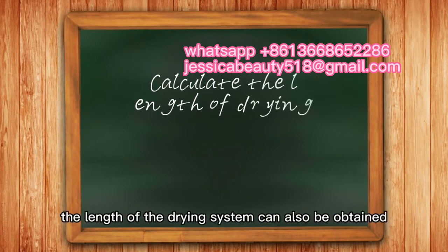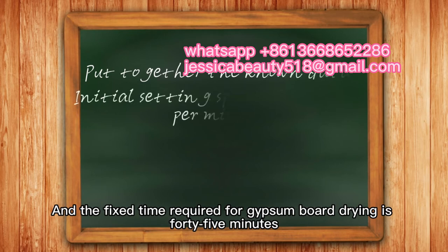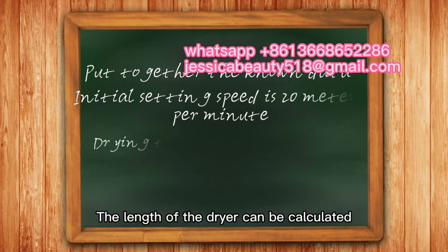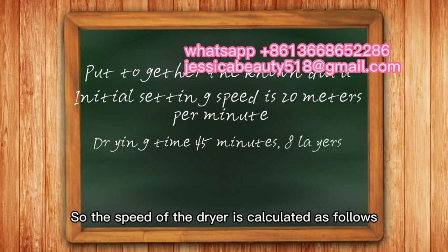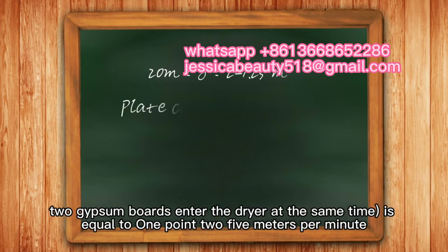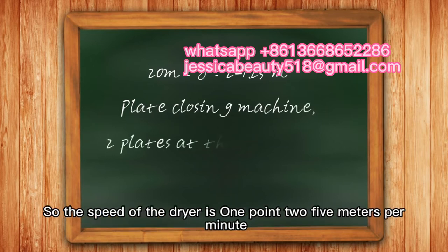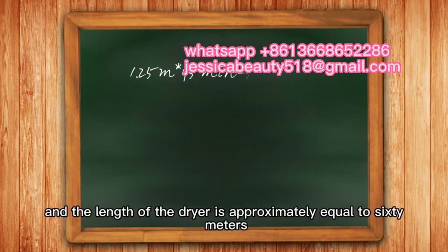The dryer length can also be calculated using the same line speed of 20 meters per minute. For a 10-million-square-meter annual output, the dryer typically has 8 layers, and after the traverse distribution, two boards enter simultaneously — so the dryer speed is 20 ÷ 8 ÷ 2 = 1.25 meters per minute. With a required drying time of 45 minutes, the dryer length is approximately 60 meters.